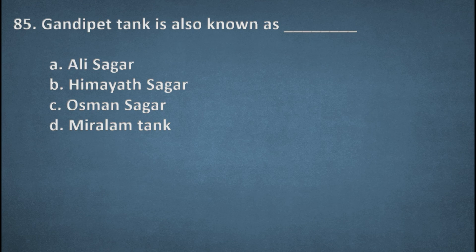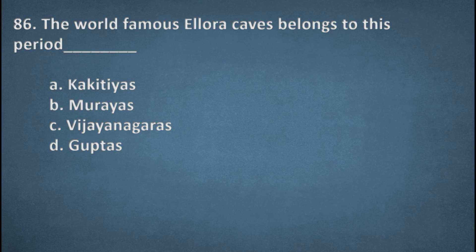Next one. Kandipet tank is also known as. Options: Ali Sagar, Himayat Sagar, Osman Sagar, Miralam tank. Right option, C, Osman Sagar. Next one. The world famous Ellora caves belong to these spirits. Options: Kakatiyas, Mauryas, Vijayanagara, Guptas. Right option, D, Guptas.